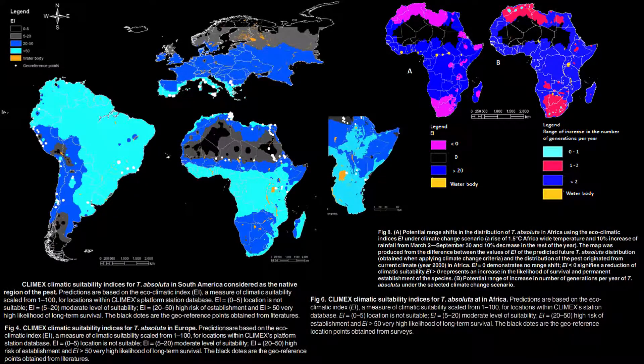It was estimated by Desneux and others in 2011 that a total of 84.9% (3.7 million hectares) and 87.4% (133.7 million tons) of world tomato crop surface and world tomato production respectively were directly threatened by Tuta absoluta, and this has held true.